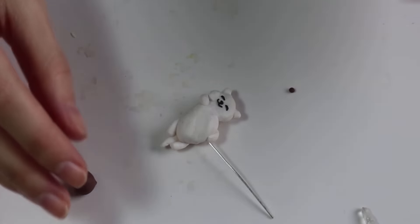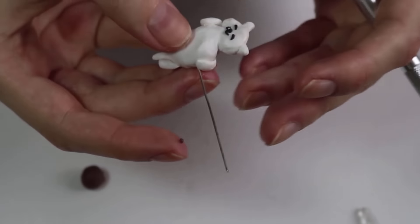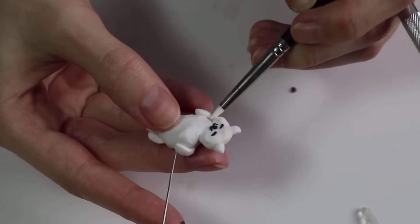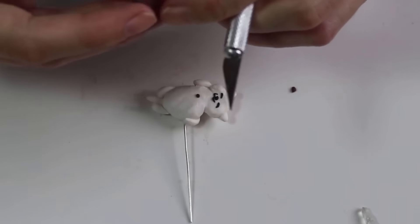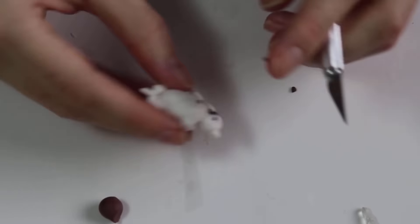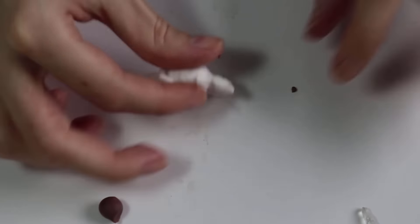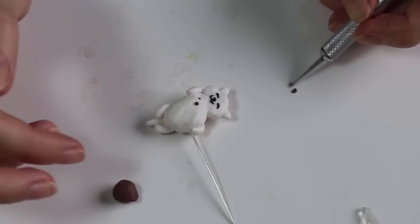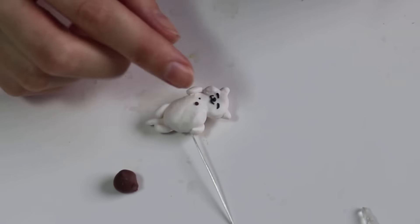And the last step is adding on his little bits of food. So again, just straightening everything out and adding a big piece and two small pieces. So two on his belly, and then one on his cheek.